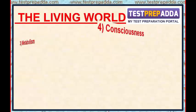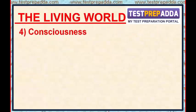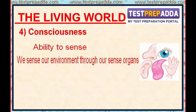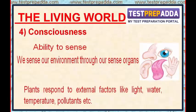Consciousness: all living organisms have the ability to sense their surroundings or environment. They respond to environmental stimuli, which could be physical, chemical, and biological. We sense our environment through our sense organs. Plants respond to external factors like light, water, temperature, pollutants, etc. Human beings, among organisms, are aware of themselves — that is self-consciousness.